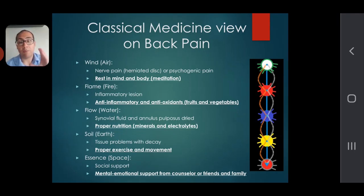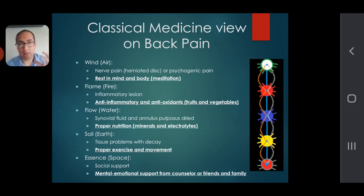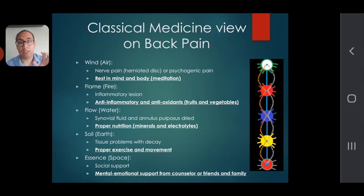In classical medicine on back pain: if your back pain is from nerve irritation — specifically nerve-related, like maybe a herniated disc pushing on the nerves — that is the air or wind type element being disturbed. What that means is you need to rest your body. You'll see it underlined and bolded — the lifestyle recommendation is to rest the mind and body.